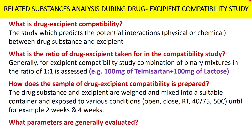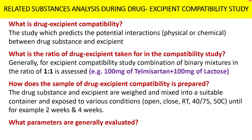As part of drug-excipient compatibility study, you want to understand the impact of the excipient on the drug substance — physically, chemically, or microbiologically. Most commonly, physical attributes like polymorphism and chemical attributes like related substances or impurities are evaluated. When using a method for evaluation of related substances, ensure the method is already validated; most people use the API's method from the filed DMF, where validation is already established.